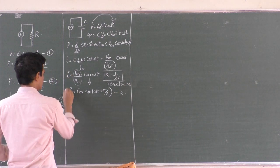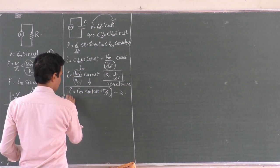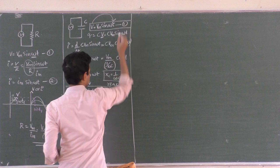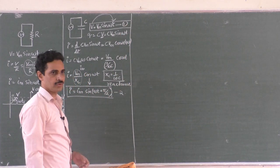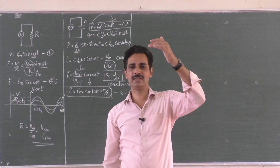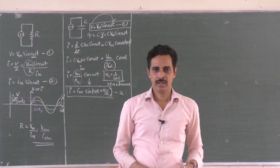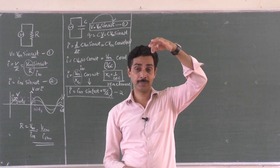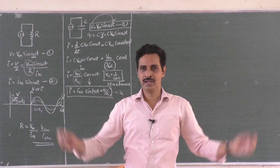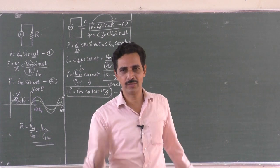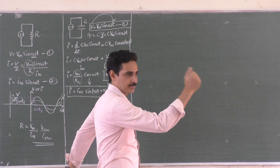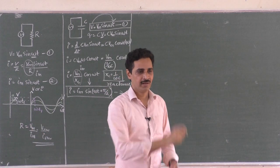Equations 1 and 2 show that current leads the EMF by π/2. A phase difference of 90 degrees means when one quantity is at its peak, the other is at zero. A phase difference of 180 degrees would mean when one is at the positive peak the other is at the negative peak — like two pendulums vibrating in opposite directions when walking, where arms are 180 degrees out of phase.